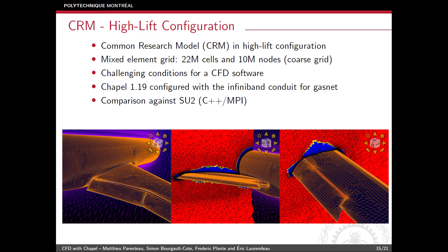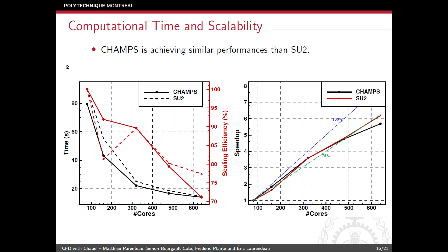CHAMPS was compiled using Chapel 1.19, configured for InfiniBand with GASNet, running on Béluga, a computer cluster with an InfiniBand network. The comparison is performed against SU2, a well-known open-source CFD code written in C++ with MPI from Stanford University. Even though CHAMPS and SU2 solve the same equations, they use different algorithms, making direct comparison difficult. The goal is to see if CHAMPS achieves similar performance to SU2 on the same problem.